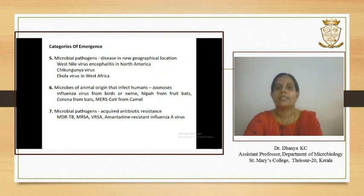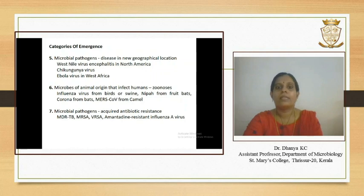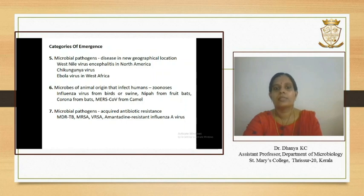Category 7 includes microbial pathogens that have acquired the ability to resist the effect of antibiotics. Examples are multi-drug resistant tubercle bacilli, methicillin-resistant Staphylococcus aureus (MRSA), vancomycin-resistant Staphylococcus aureus, and amantadine-resistant influenza A virus.